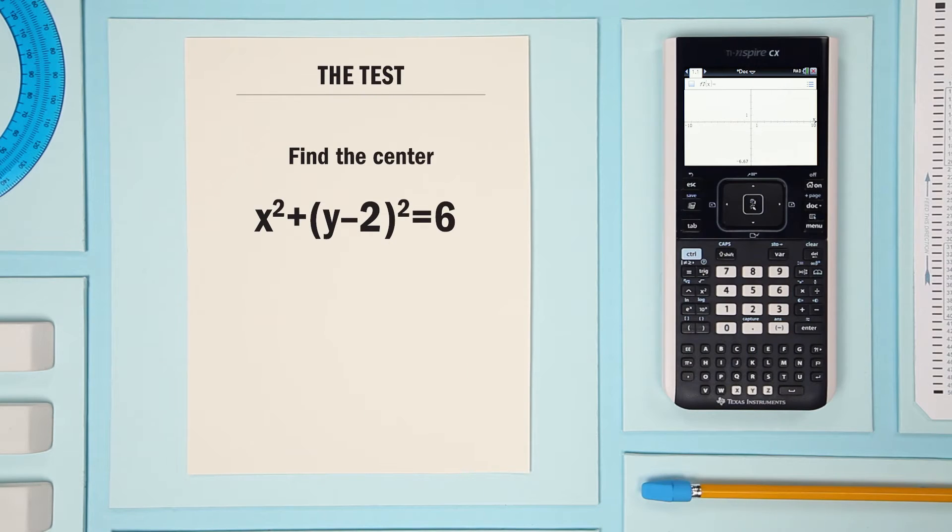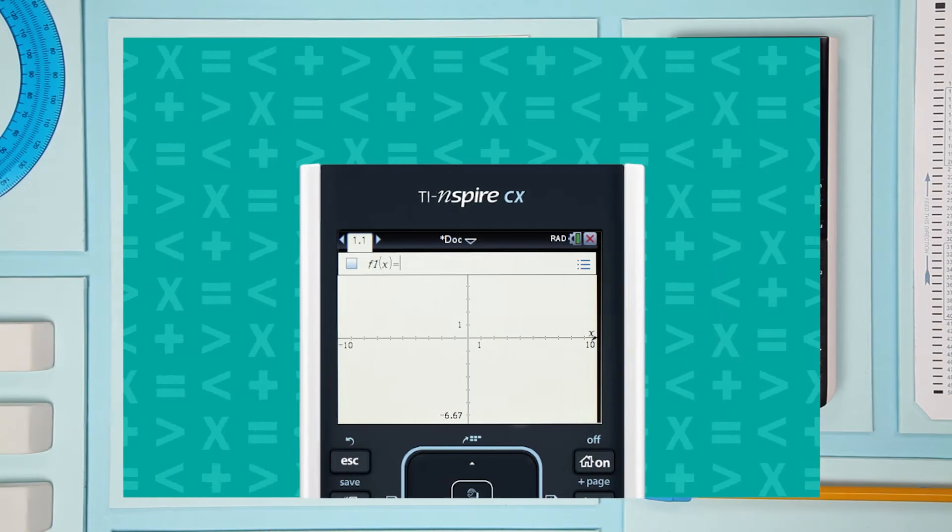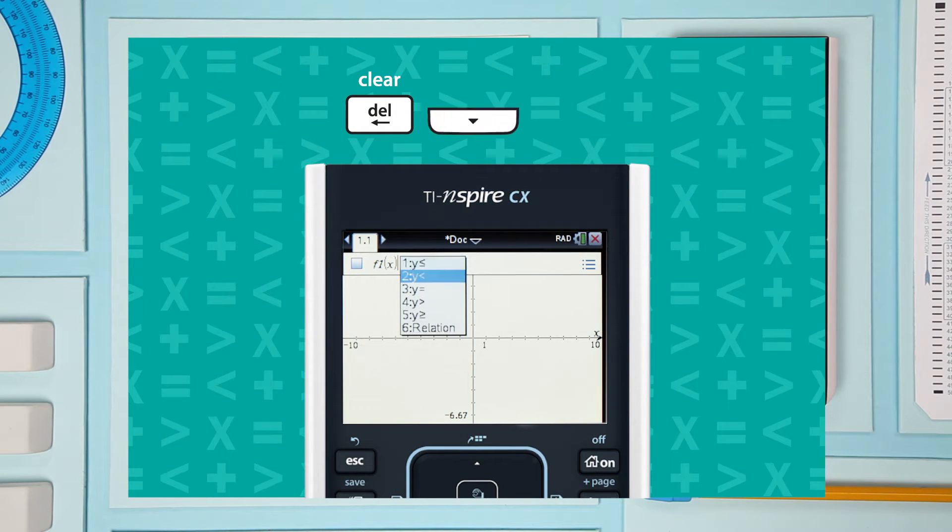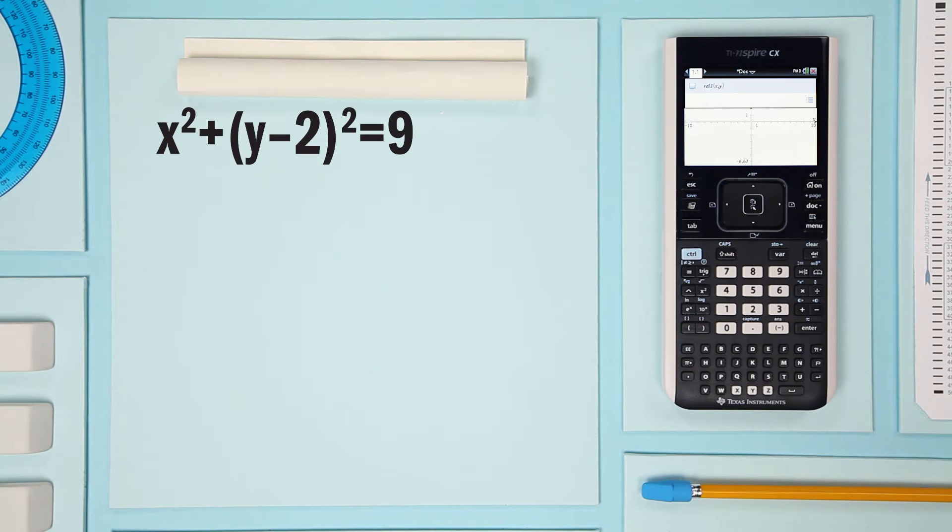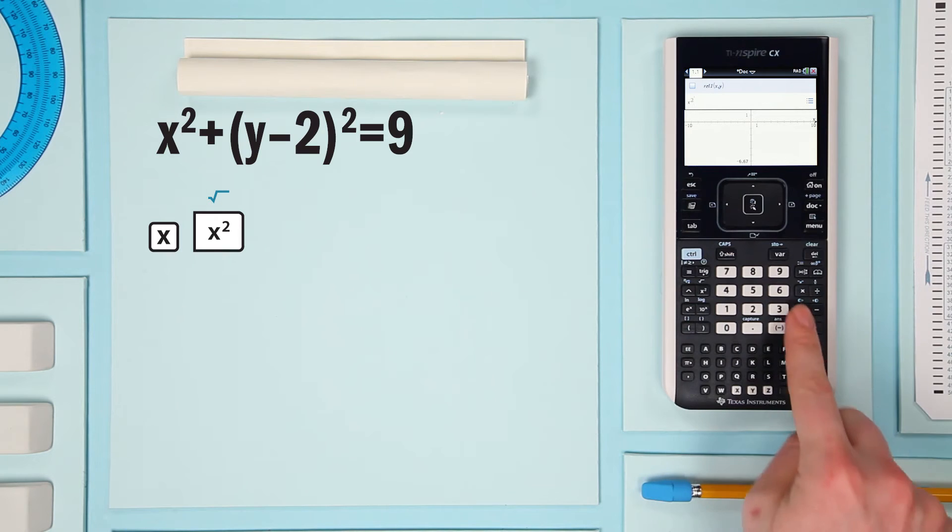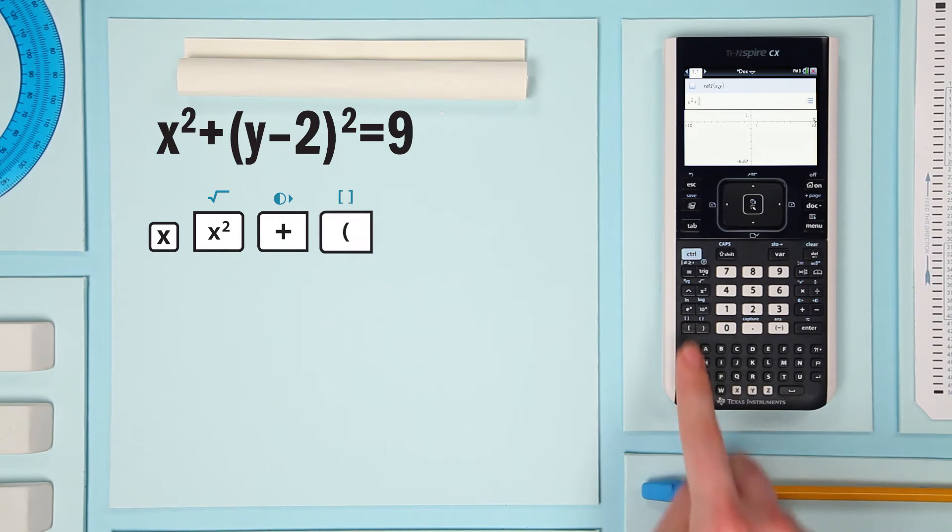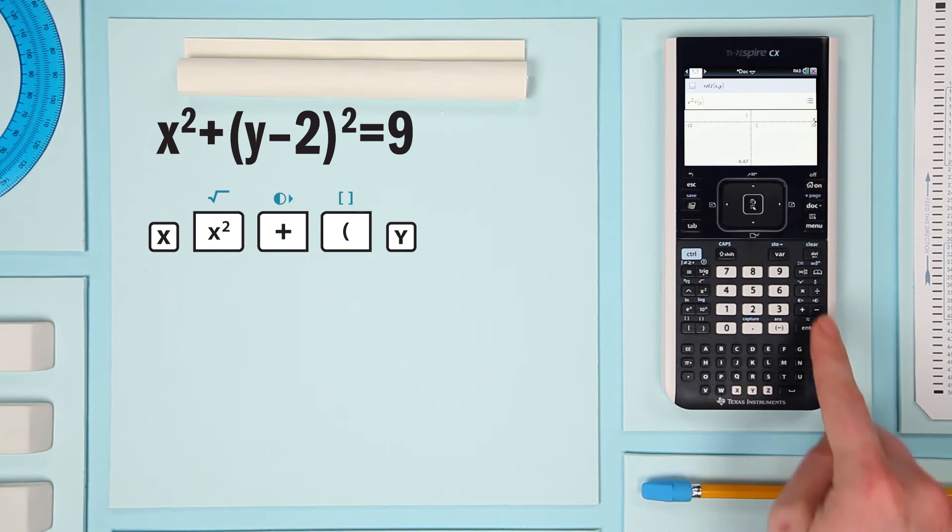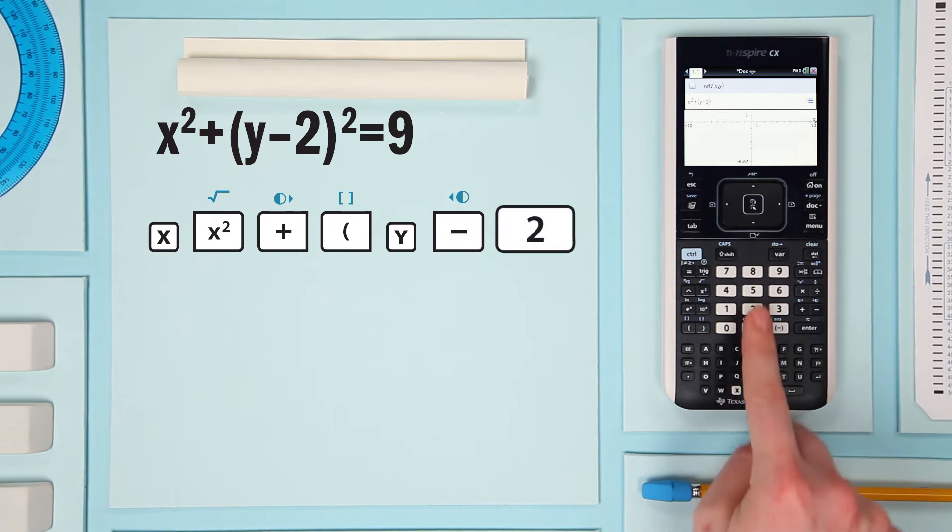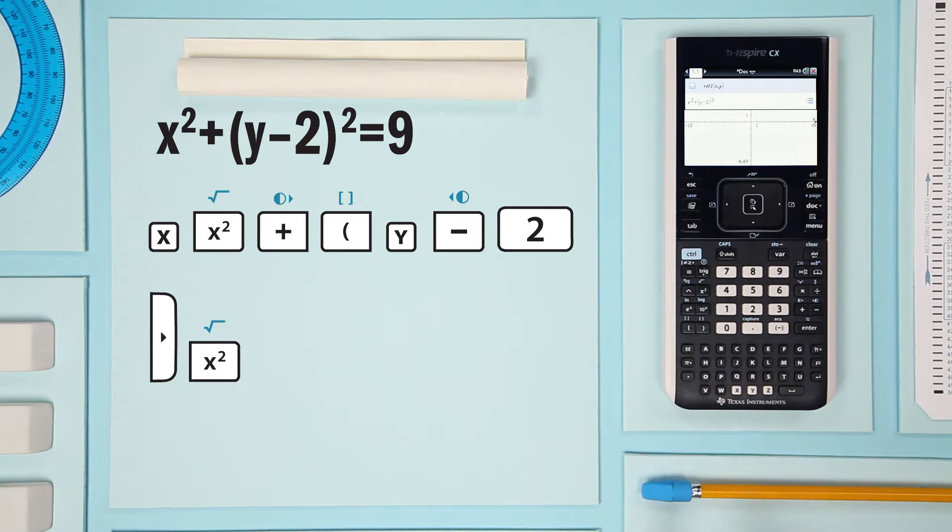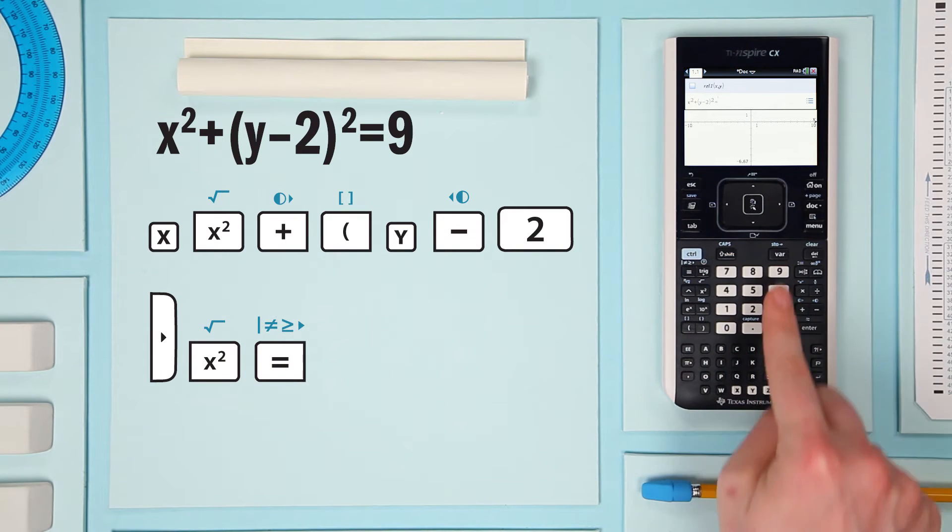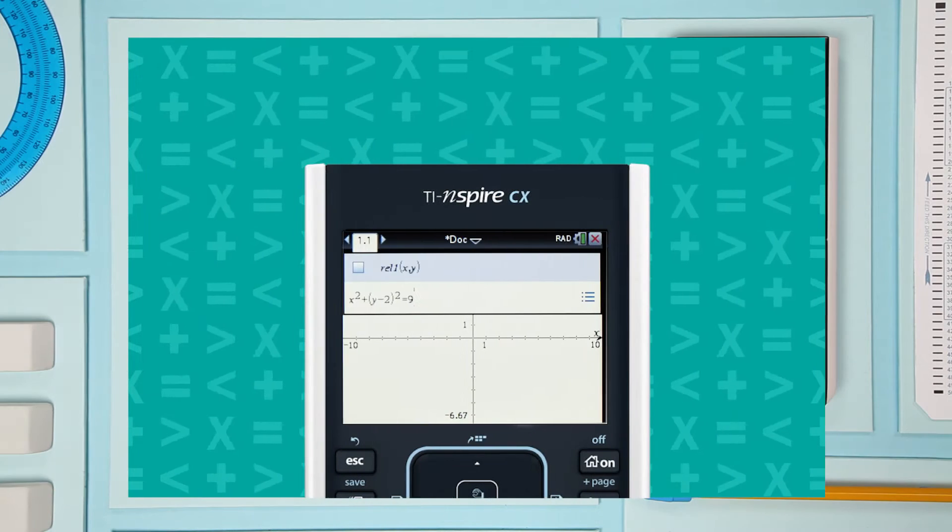Now, let's try with something you could see on a test. Open the drop down, select Relation. Now, graph your circle. And enter.